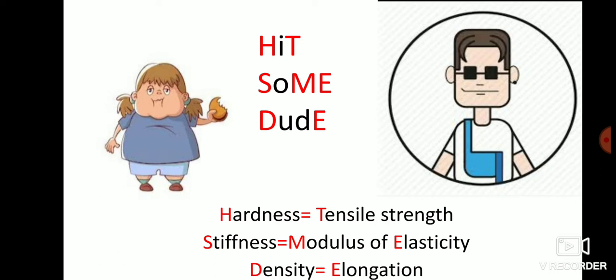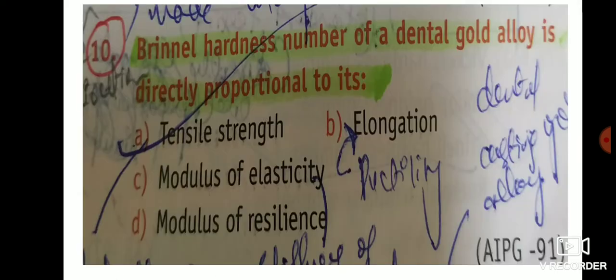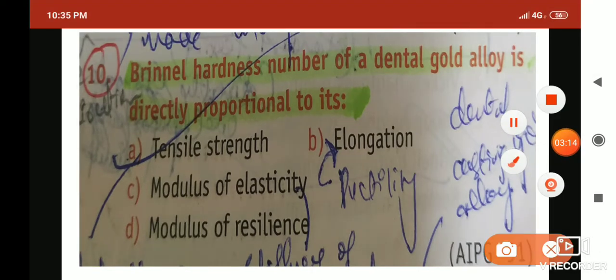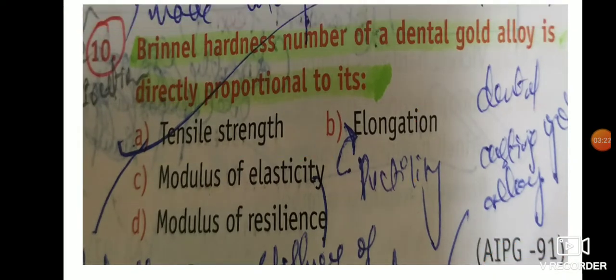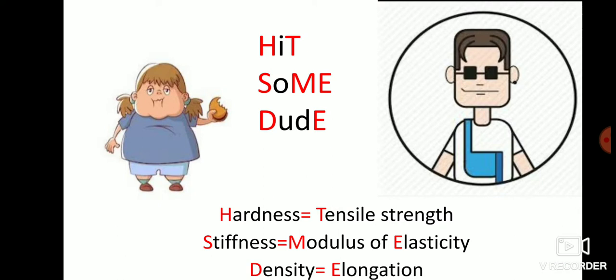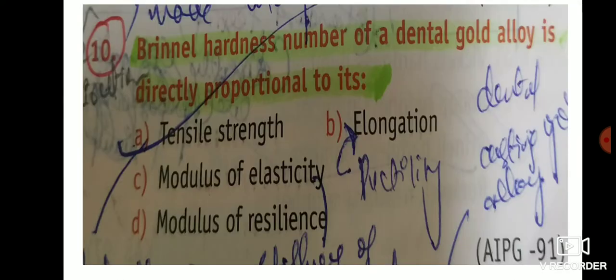Now let's apply this mnemonic to MCQs. Question 10: 'The Brinell hardness number of a dental gold alloy is directly proportional to its — (a) Tensile strength, (b) Elongation, (c) Modulus of elasticity, (d) Modulus of resiliency.' Here you can see 'Brinell hardness number,' so using the mnemonic HIT, hardness equals tensile strength.